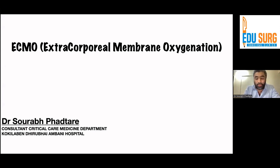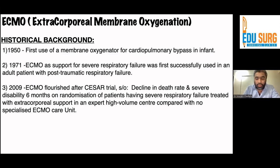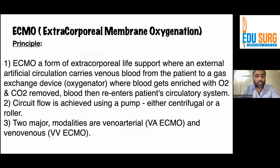ECMO being Extra Corporeal Membrane Oxygenation. Down the memory lane, the first use of membrane oxygenator for a cardiopulmonary bypass was in infants in 1950. In 1971, the first adult ECMO was successfully used in an adult patient with post-traumatic severe respiratory failure. The patient was on ECMO for three to four days and was successfully weaned off. In 1972, it was successfully used in pediatric cardiac cases and 75 neonatal cases. And in 2009, after the CESAR trial, the use of ECMO really flourished. You can see this is one of the latest machines which we have, the Cardio Help, which is very user-friendly and can be used conveniently and can be used for patients for transport as well.